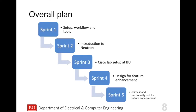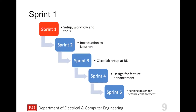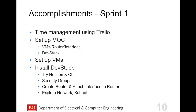Now I'd like to discuss our overall plan, sprint by sprint, going through sprints 1 through 5. First we'll look at sprint 1, where we set up the workflows and tools. Our accomplishments in sprint 1 included time management using Trello, setting up the MOC, VMs, router interface, DevStack, installing DevStack, trying out Horizon, security groups, creating routers, and other such workflows.